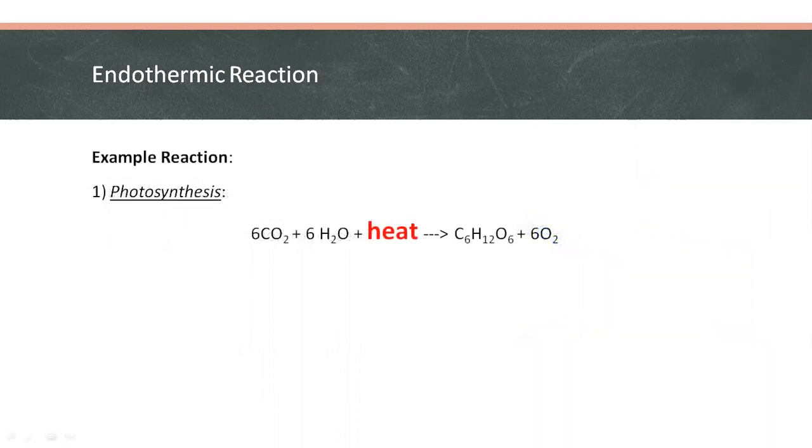An example of this is photosynthesis, wherein plants absorb heat energy from sunlight to convert carbon dioxide and water into glucose and oxygen, as illustrated in the chemical equation.